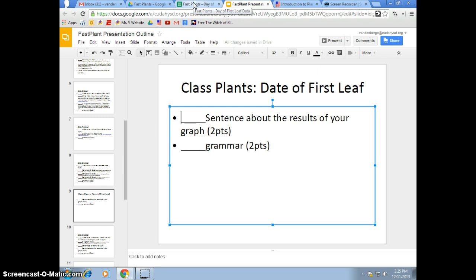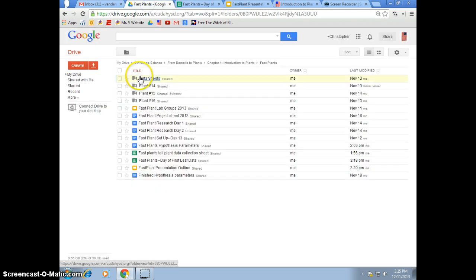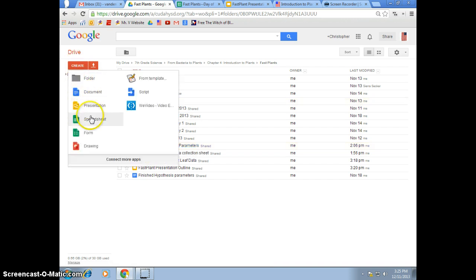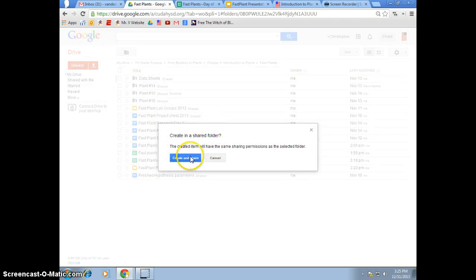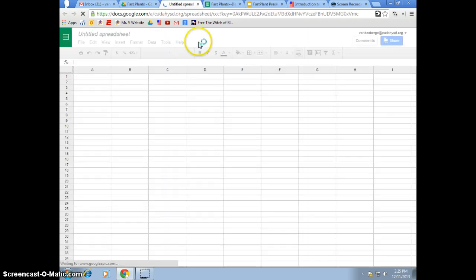So now, how do we create that pie graph? Very similar to the same way we created the quadruple line graph. First thing that you need to do. Open up your Fast Plant folder. Make sure that you are in that when you go to create your spreadsheet. Go to spreadsheet, create and share.